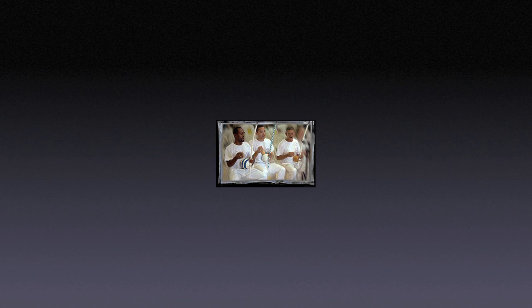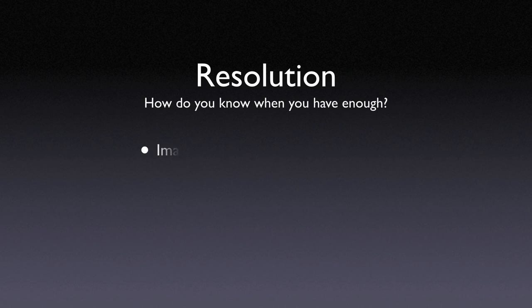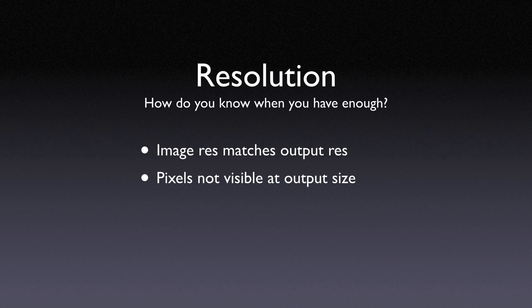But if we shrink that same collection of pixels down in size, we have a reasonable, high-res image for that size. This image is exactly the same as the previous one, but now the pixels are small enough that we are not aware of them. Sometimes people ask for a high-res image and say something like, 'Give it to me at 300 dpi,' but half the information is missing — the question is, 300 dpi at what size? If your image resolution matches your output resolution, typically you have enough. The biggest determiner is whether you can see pixels at the output size; if you are aware of jaggy edges, you do not have a high enough resolution.